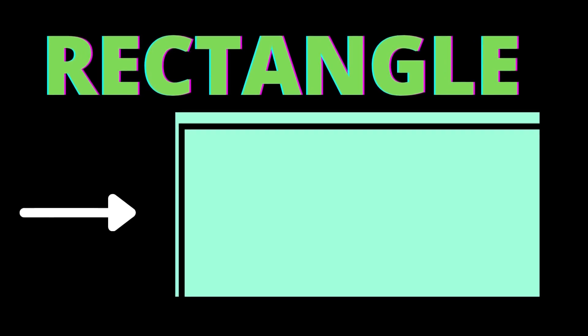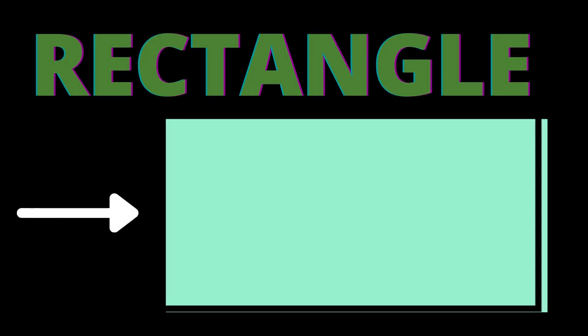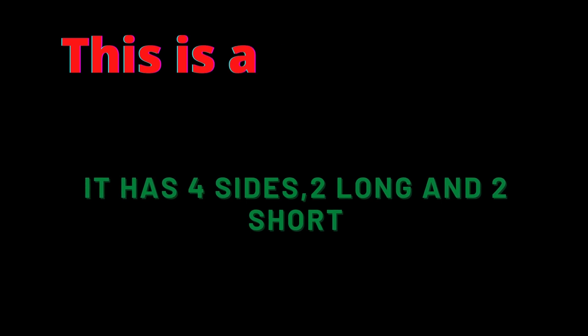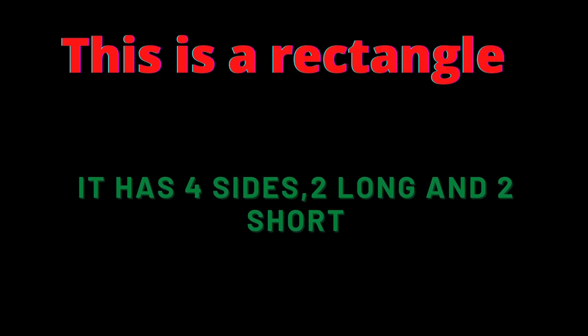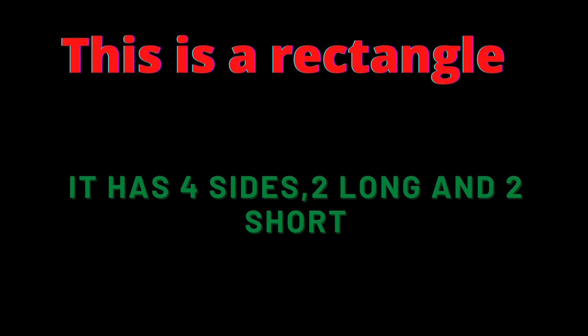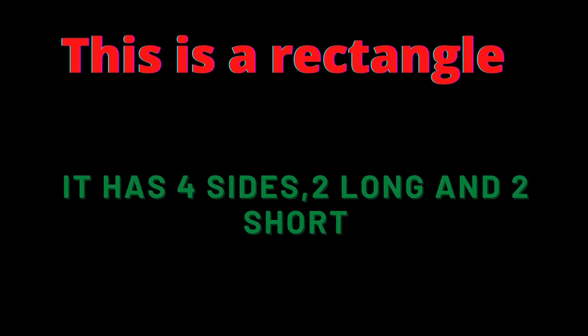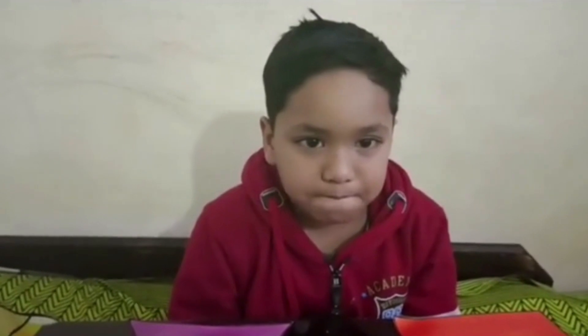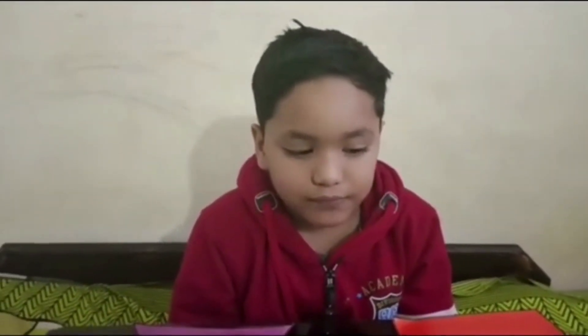R-E-C-T-A-N-G-L-E, rectangle. This is a rectangle. It has four sides — two long and two short. The two opposite sides are equal. What shape is that?